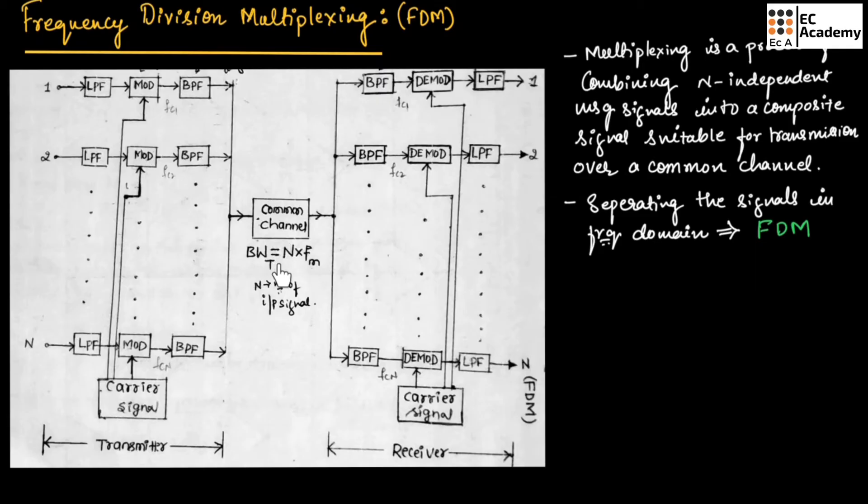The multiplexed signal is transmitted over a communication channel with bandwidth N into FM. Here, N represents the number of input signals, and FM is the frequency of modulated signal. So, the transmitted bandwidth will be N into FM.